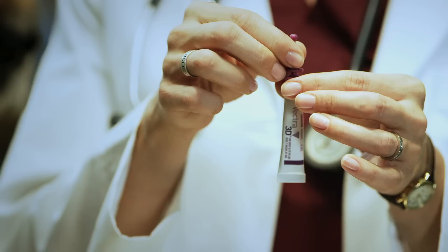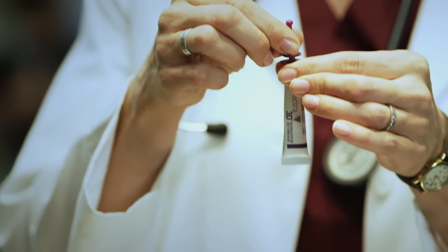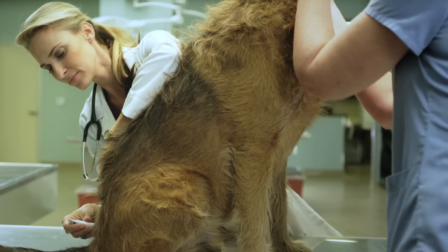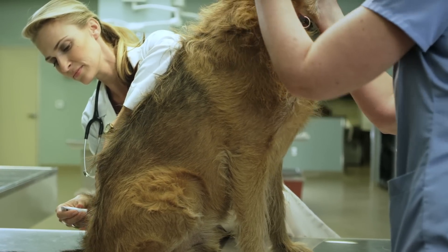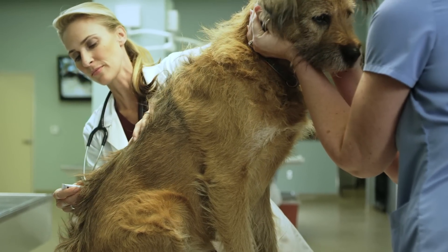Holding applicator upright, place fingers on discs. Press discs together, breaking the seal. Using the applicator tip, part the hair at the base of the tail. Begin applying the product onto the skin in a continuous line along the center of the back all the way to the shoulder blades.